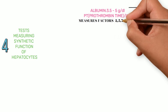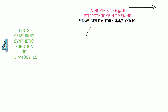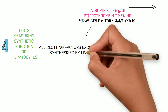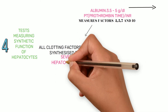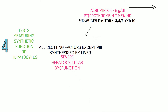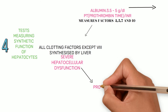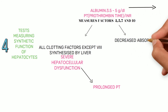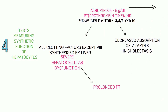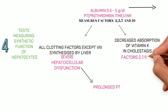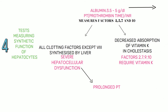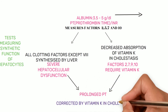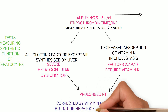Prothrombin time measures clotting factors 2, 5, 7, and 10. All clotting factors except factor VIII are synthesized by hepatocytes, so when there is severe hepatocellular damage, synthesis of these clotting factors is affected, resulting in prolonged prothrombin time. In cholestasis, there is decreased vitamin K absorption, and clotting factors 2, 7, 9, and 10 are vitamin K-dependent, so prothrombin time is prolonged in cholestasis too. However, it can be corrected by giving vitamin K in cholestasis, but not in severe hepatocellular dysfunction.